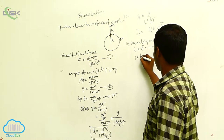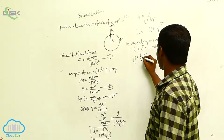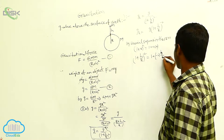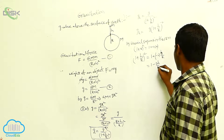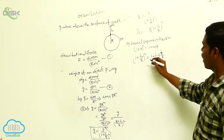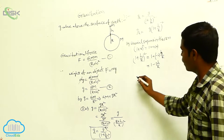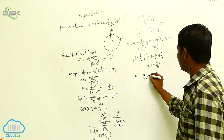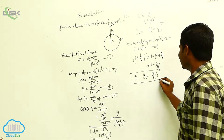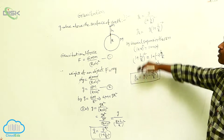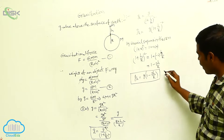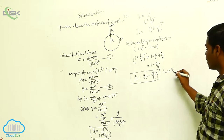By this expansion we can write (1 + h/r)^(-2) is equal to 1 minus 2h/r. Substituting, g_h is equal to g into (1 minus 2h/r). This is the acceleration due to gravity above the surface of the earth, where h is very much smaller than the radius of the earth.